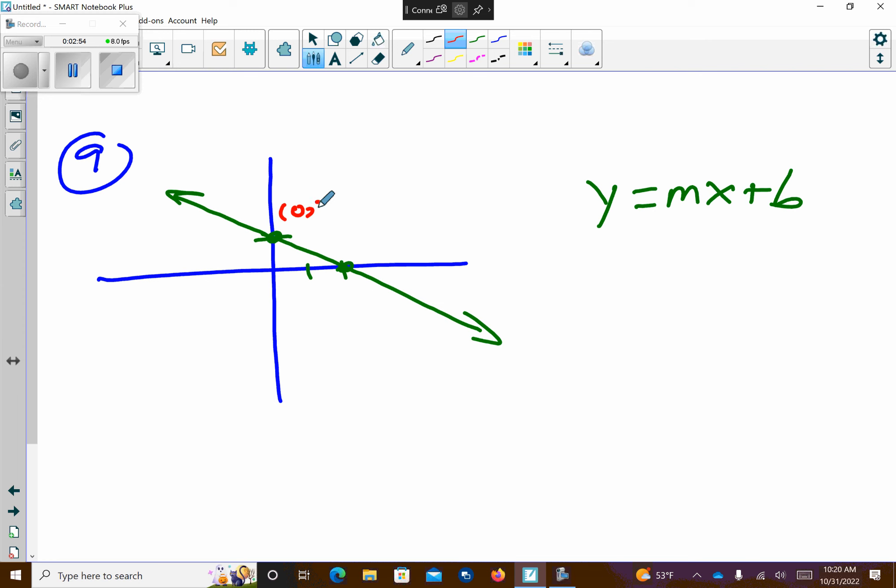So I know that this is the point 0, 1. This is the point 2, 0. So the y-intercept is what letter in y equals mx plus b? Is it y, m, x, or b? B. So that means our b value, this is our b value.